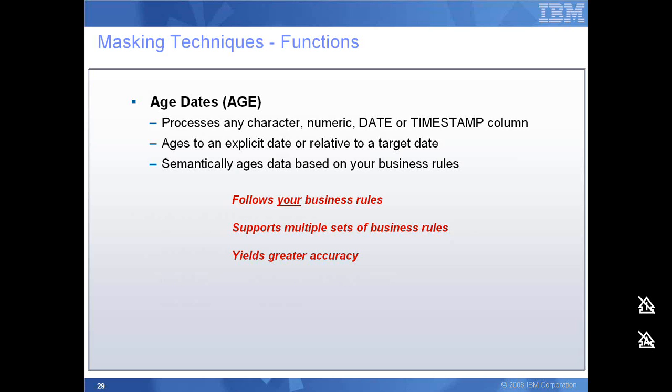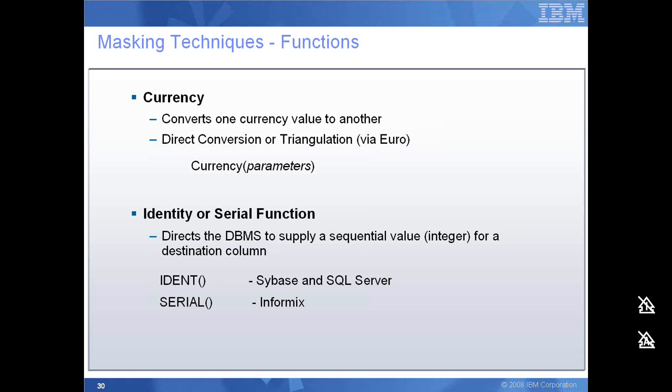I can convert currency from one format to another format. Optim also has support for identity and serial functions, which are basic features in any RDBMS. I can have an identity column which ensures that every time I insert a particular record, it increments by a specific value. Some of these features are specific to certain RDBMS: identity is available only on Sybase and SQL Server, whereas serial is available on Informix database environments.